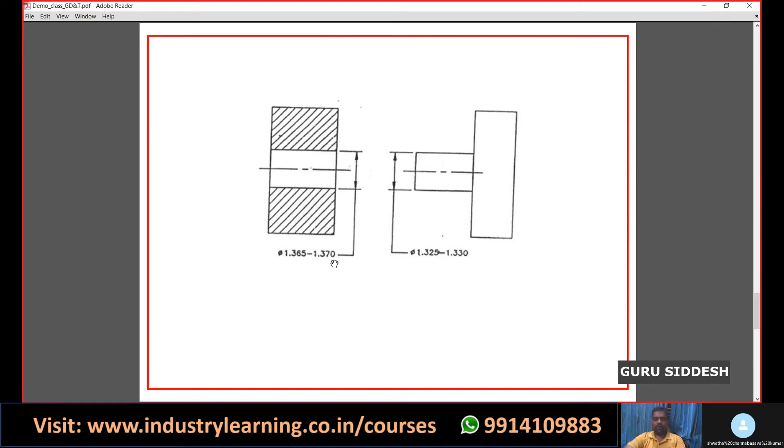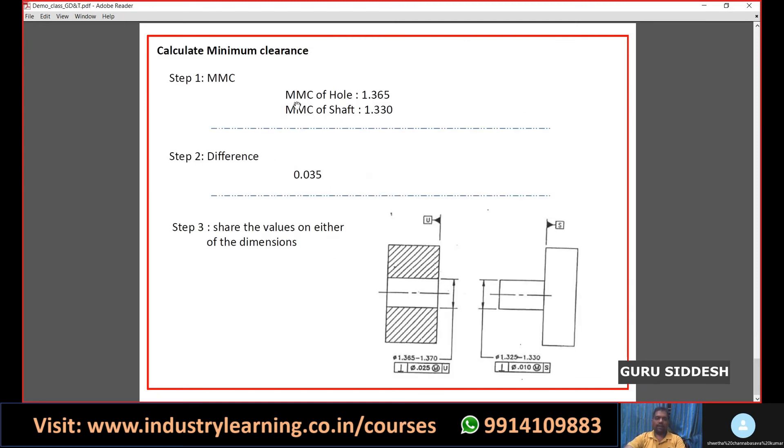We're going to find out the minimum clearance between these two. When we calculate the minimum distance, the MMC of the hole is 1.365 and MMC of the shaft will be 1.330. When we subtract these both, we get a difference of 0.035. This 0.035 is the minimum clearance available between these two features, which is going to be used for the geometrical tolerance.